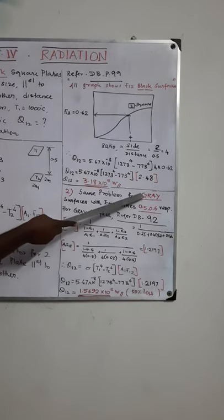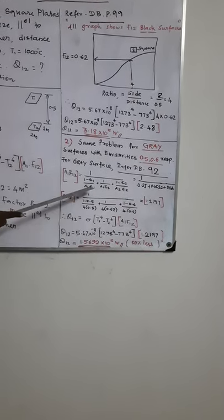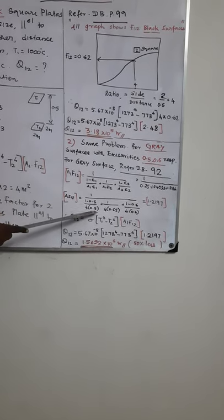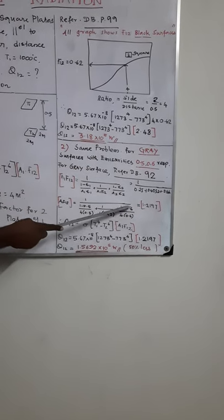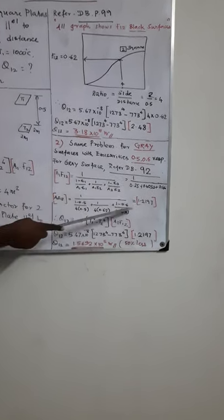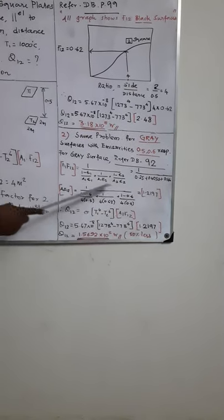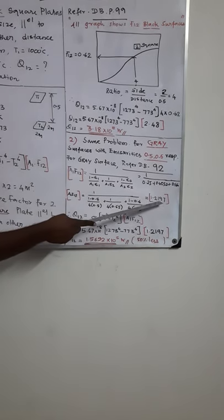Now we are going to work for a gray surface. So substitute the e1 value and e2 value here. That is, 1 minus e1 is 0.5 divided by area into e1 plus 1 by a1, f1, 2, that previous value. Plus 1 minus e2, 0.6 is assumed, into a2, into e2. So if you solve this value, you will get a revised a1, f1, 2 value which is equal to 1.2197.